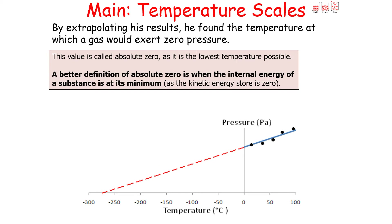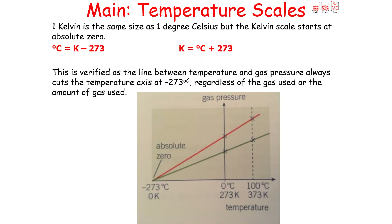One Kelvin is the same size as one degree Celsius, but the Kelvin scale starts at absolute zero. To convert from Kelvin to degrees Celsius, you do Kelvin minus 273. To convert from degrees Celsius to Kelvin, you do degrees Celsius plus 273. This is verified because the line between temperature and gas pressure always cuts the temperature axis at minus 273 degrees Celsius, regardless of the gas used or the amount of gas — it always cuts at the same point.